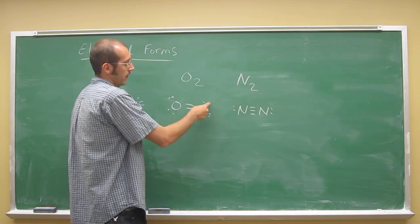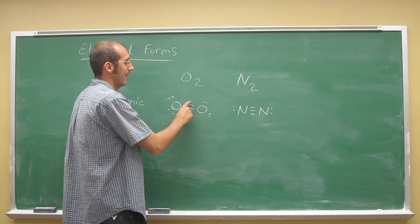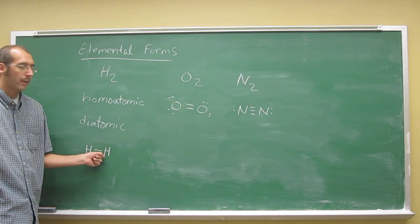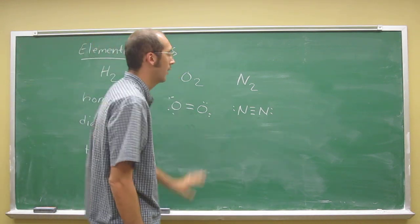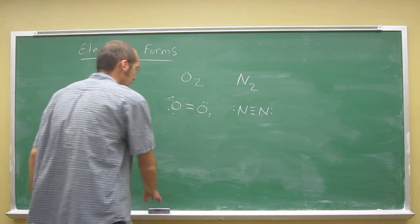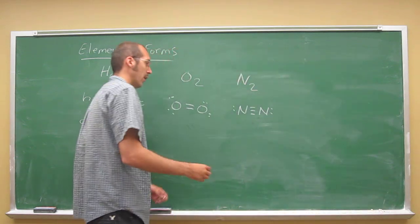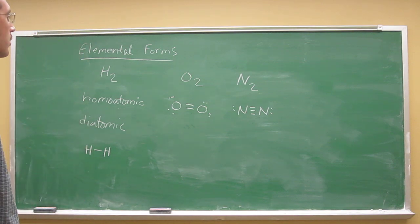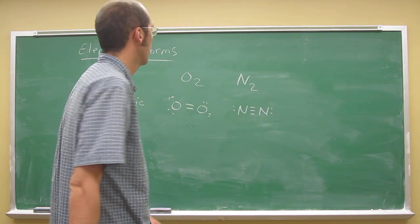We already said these little dots are called lone pair electrons, which we'll get into later. These lines are called bonds. In between these atoms, we have here a single bond, a double bond, and a triple bond. Again, it's something that's out of the scope of what you need to know right now for the exam, or for chapter one. But it is good to realize that there are structures - these molecules do have a structure associated with them.